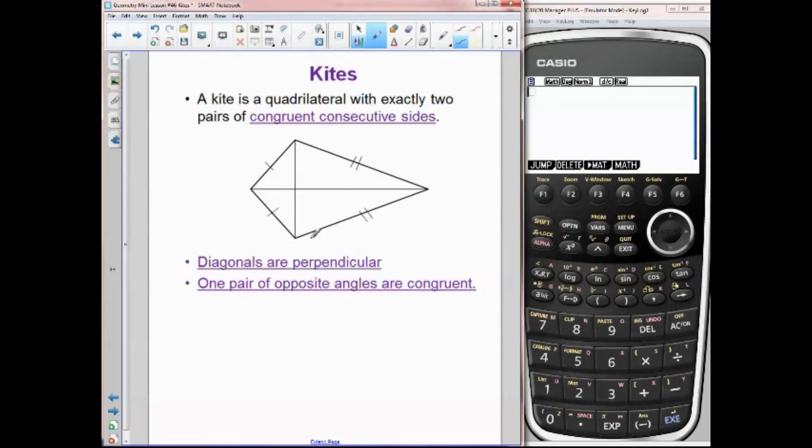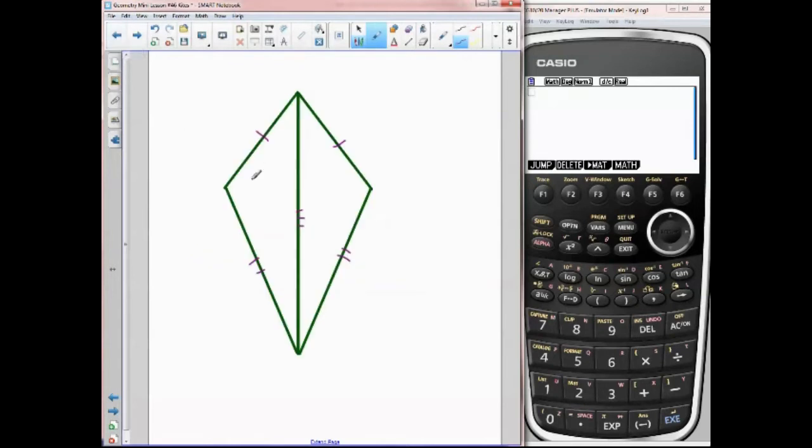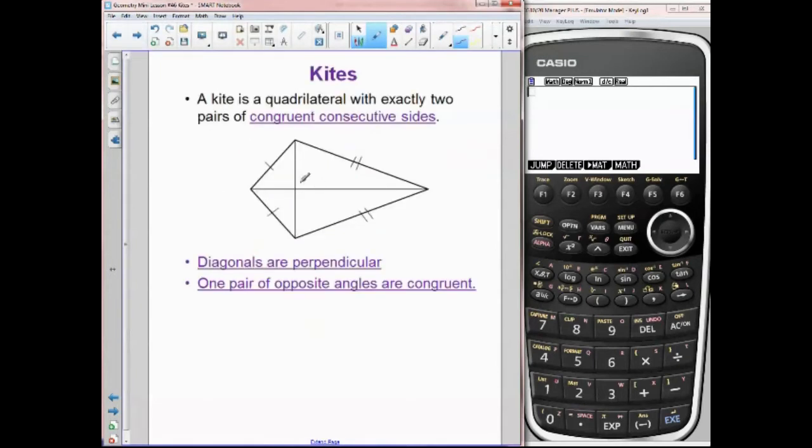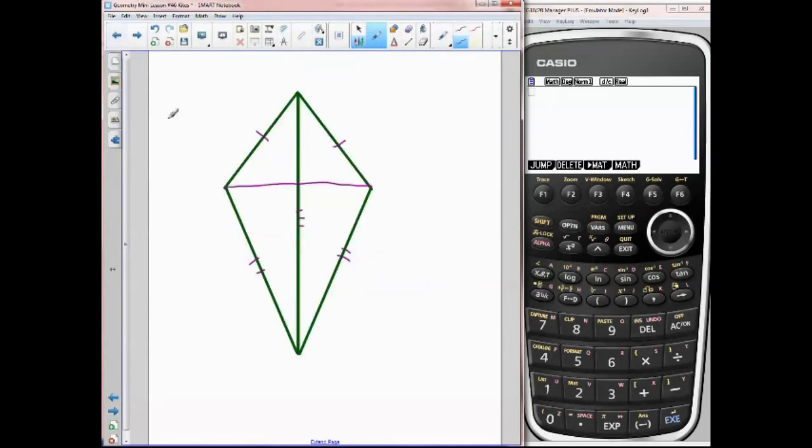Diagonals are perpendicular. Well we know that because when we did this and we were to actually draw this we would have two congruent right triangles right there. So this forms a right angle and one pair of opposite angles are congruent. And it would be this pair right here. This right here would be congruent to the other side, this right here is congruent to this opposite side right here because I reflected the triangles. Now these guys are not going to be congruent because this little angle is congruent to this angle, this angle is congruent to this one.